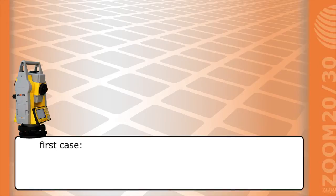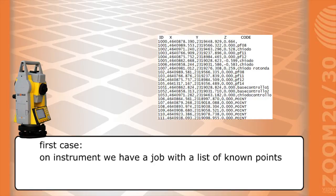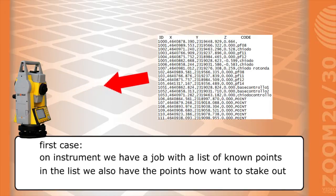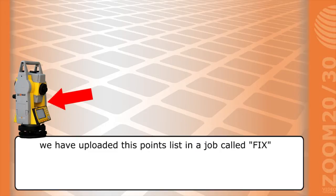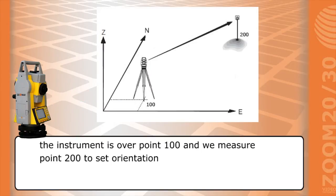First case. On instrument we have a job with a list of known points. In the list we also have the points we want to stake out. We have uploaded this file in a job called fix. The instrument is over point 100 and we measure point 200 to set orientation.